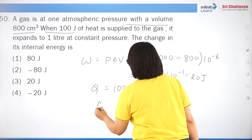Question 27: 110 joules of heat is added to a gaseous system and the change in internal energy is 40 joules. Using Q = W + ΔU: W = 110 − 40 = 70 joules, which is option 2.